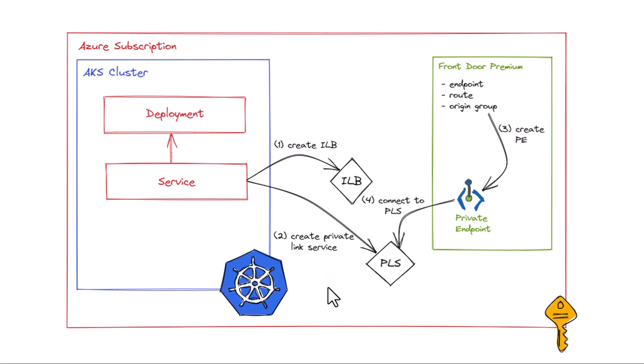What you can do as new functionality is ask AKS to also create a private link service. The private link service allows you from any network in your subscriptions — even from subscriptions in other Azure AD tenants — to connect privately to the internal load balancer. This means customers can connect to your service from their subscriptions in another AD tenant securely over the Microsoft backbone, without you needing to expose a public IP on the internet.